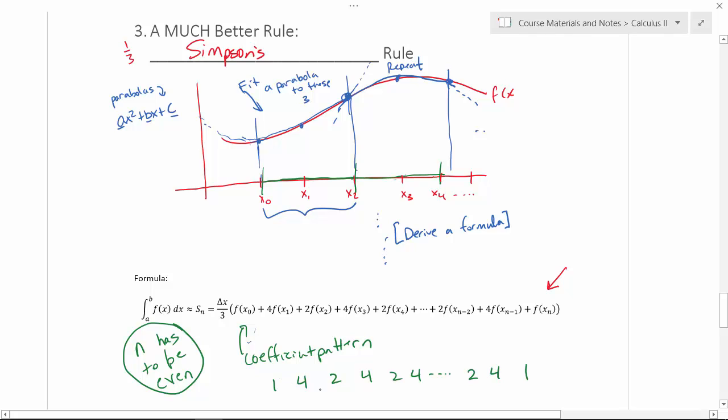Which again has the coefficient pattern of 1, 4, 2, 4, 2, all the way out to 2, 4, 1. Those are the coefficients of your function evaluations at your sub-interval endpoints.